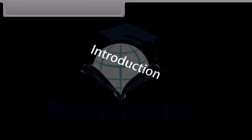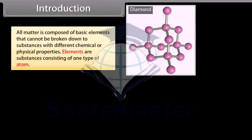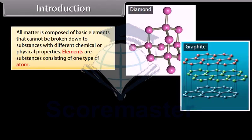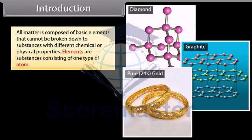Introduction. All matter is composed of basic elements that cannot be broken down to substances with different chemical or physical properties. Elements are substances consisting of one type of atom.